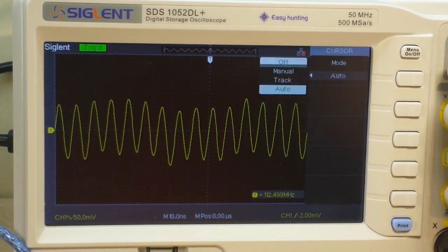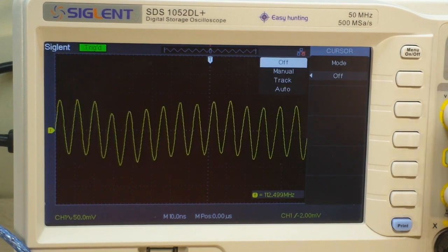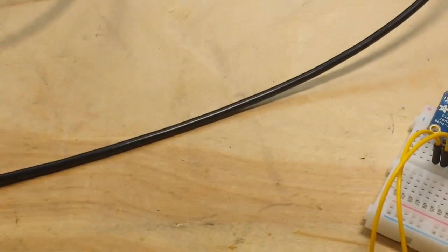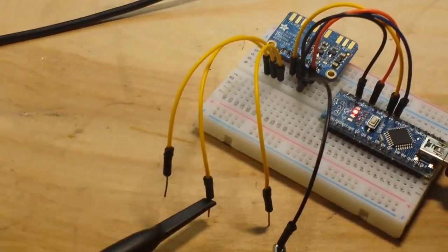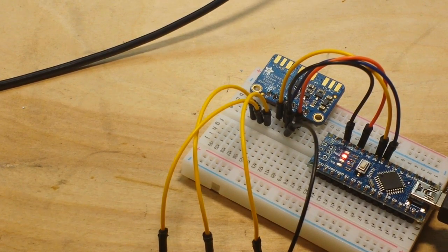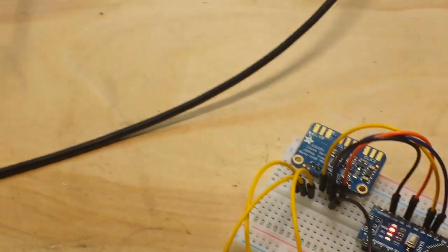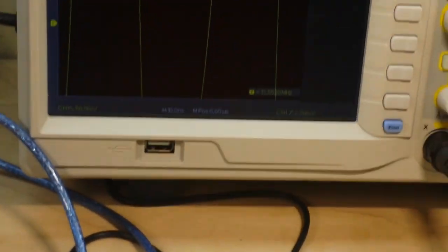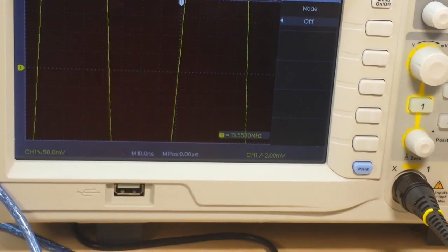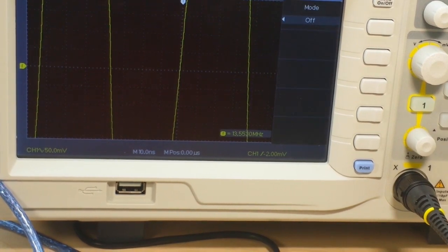All right turn this back on here and we'll turn our cursors off and then we'll go down here and look at our next output output number one we'll come back to the scope.